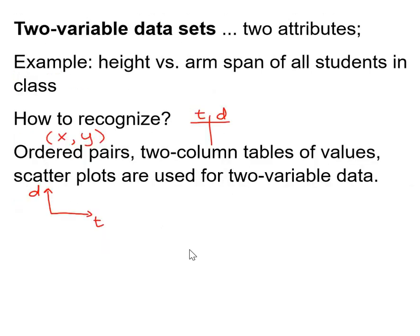Now, what about two variable data sets? They have two different attributes or two different numbers that are changing. For example, height versus the arm span of students in a class. Now you're comparing two different numbers to each other.